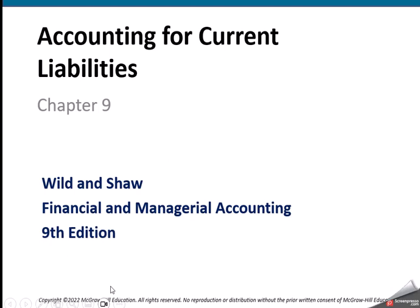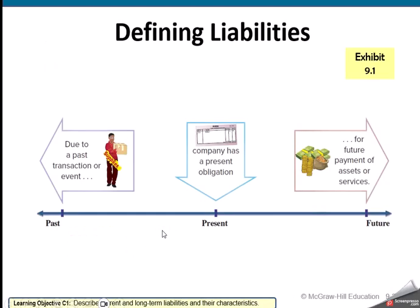Chapter 9 of Financial Accounting — we're going to talk about current liabilities. Current liabilities are when we owe a vendor or someone who we've purchased supplies or inventories from. They then send us an invoice, and we will pay them at some point in the future.